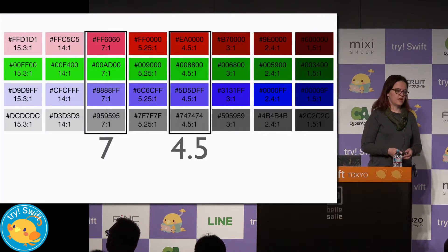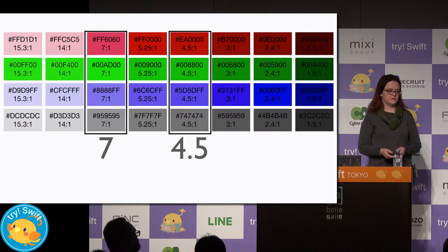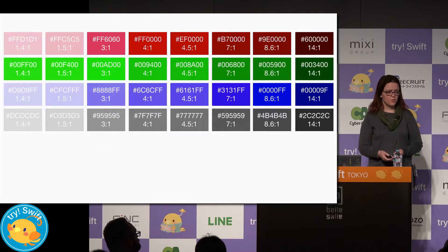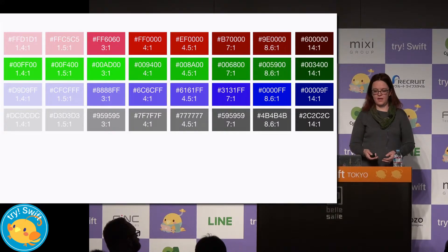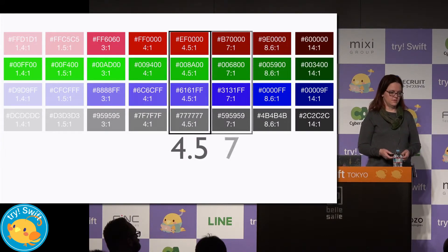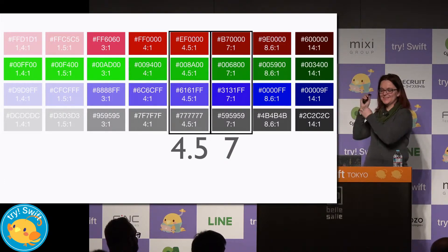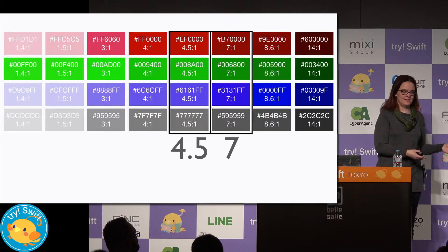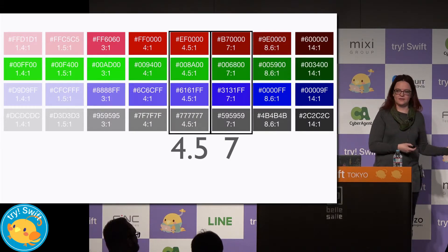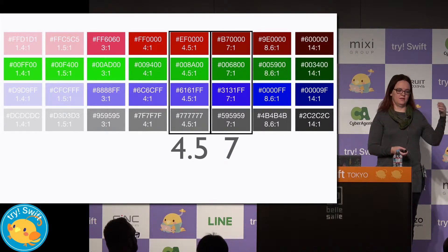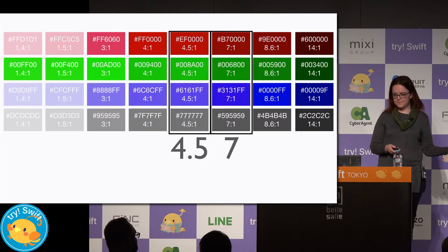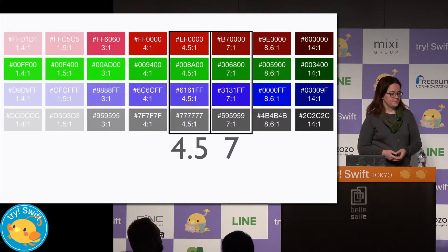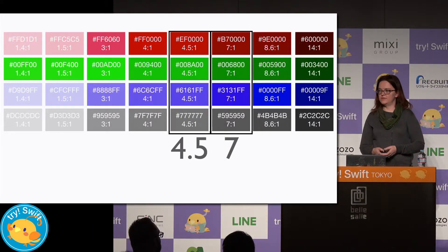We can look at any combination of colors — these are just black text on a colored background. We could also look at white text on a colored background. The colors on the right are now hard to read, and the colors on the left are very easy to read, because there is a high contrast ratio between white and a very dark blue.